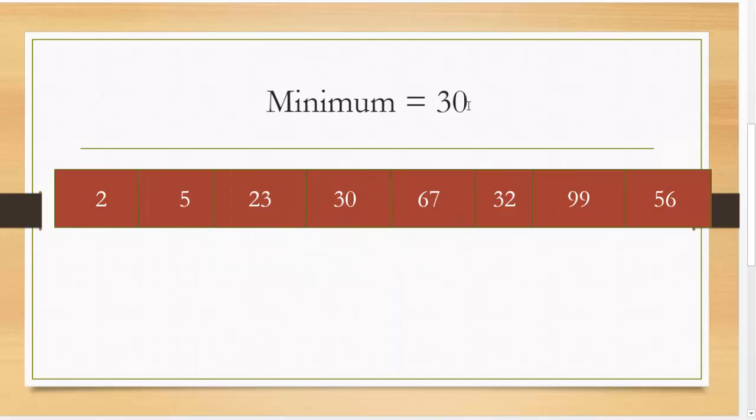Okay. Now again another element. We've got 67. And I again am doing the same thing. So 32 becomes my minimum after looking at that. Then 99 and 56 are not smaller than 32. So I will swap them and we're getting to the end here.